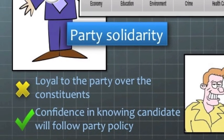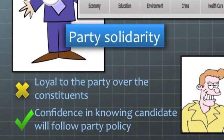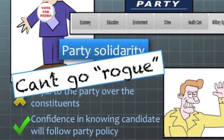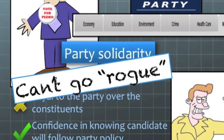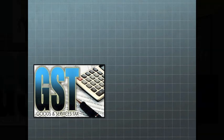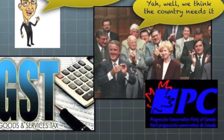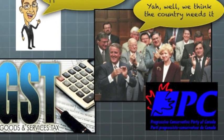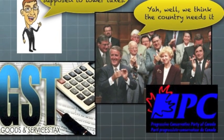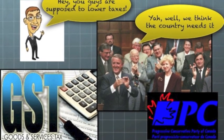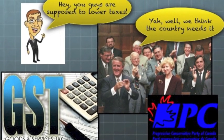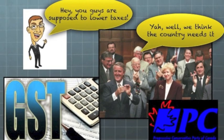So while many Canadians don't necessarily like the idea of party solidarity, because it means our local representatives are often more loyal to their party than to us, it also means that the candidate can't go rogue and do whatever they want. For example, when the GST was being passed, it was actually a Conservative government that was introducing it — which is weird, because Conservatives are supposed to be right-wing, which means they want less taxes. Albertans, who are right-wing, were especially opposed to this sales tax.